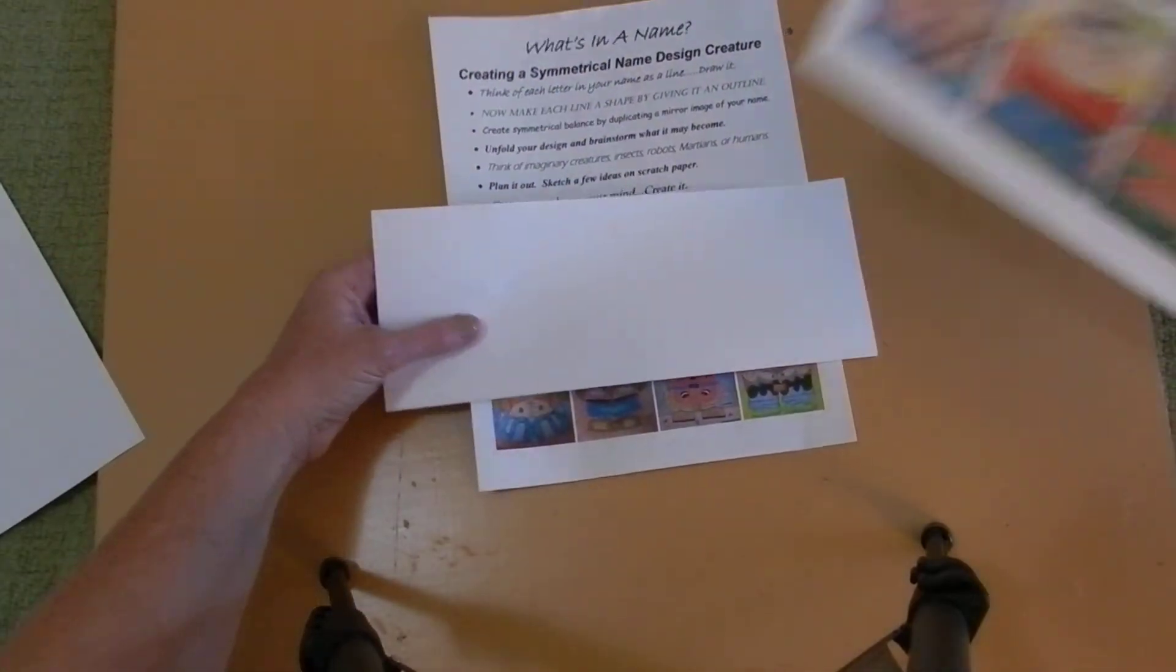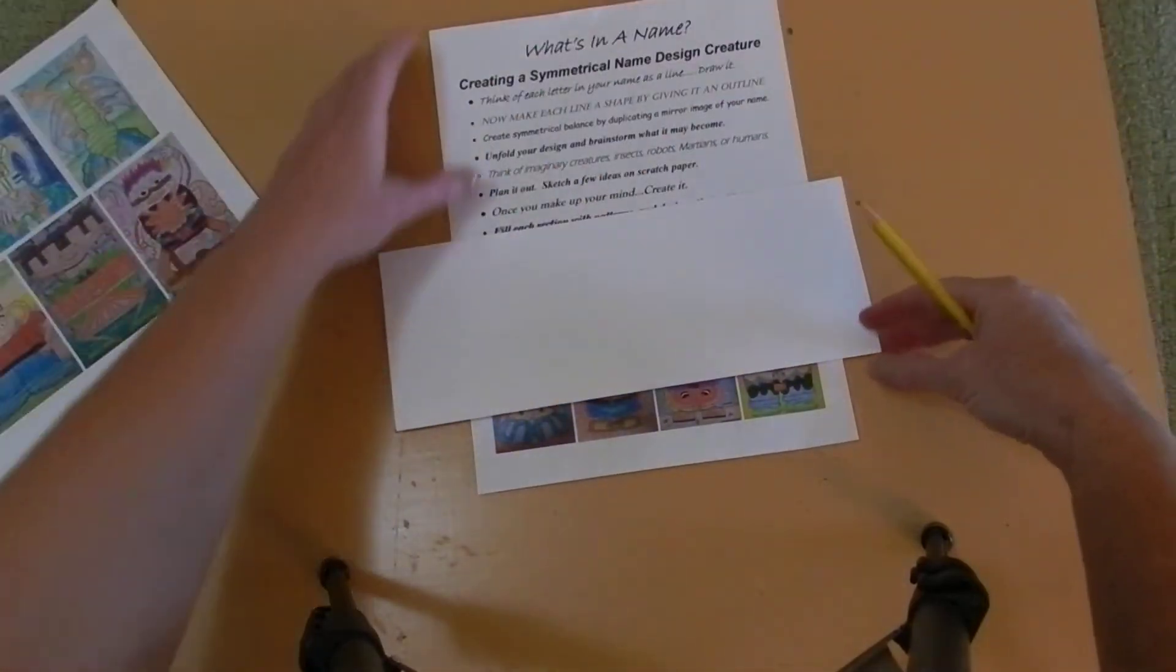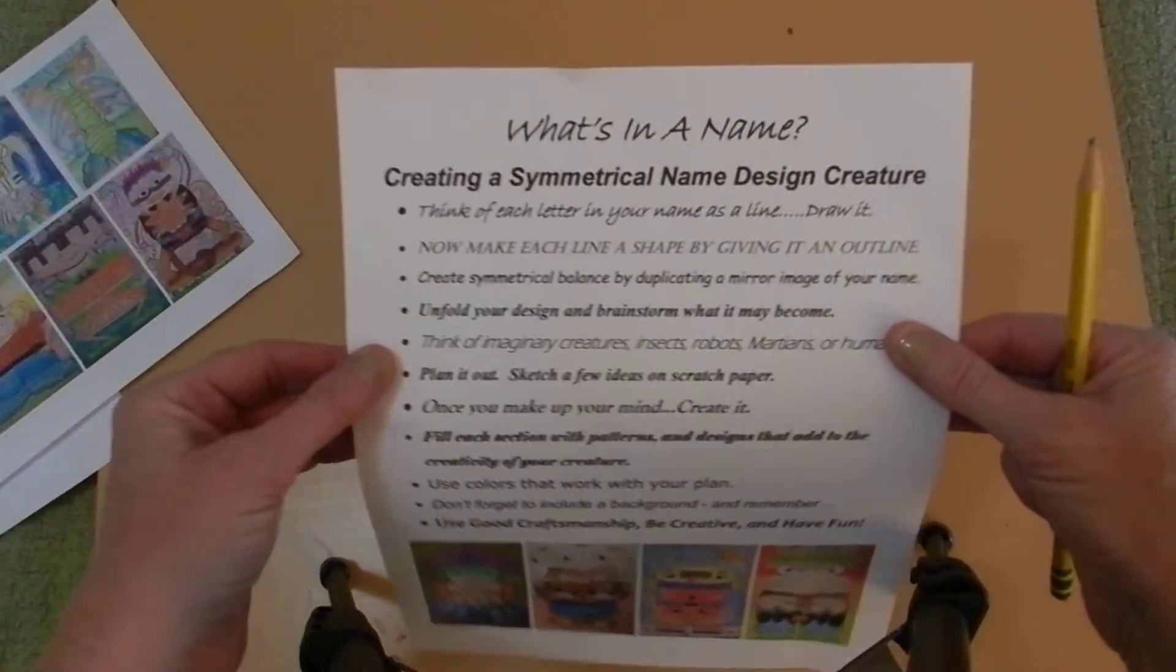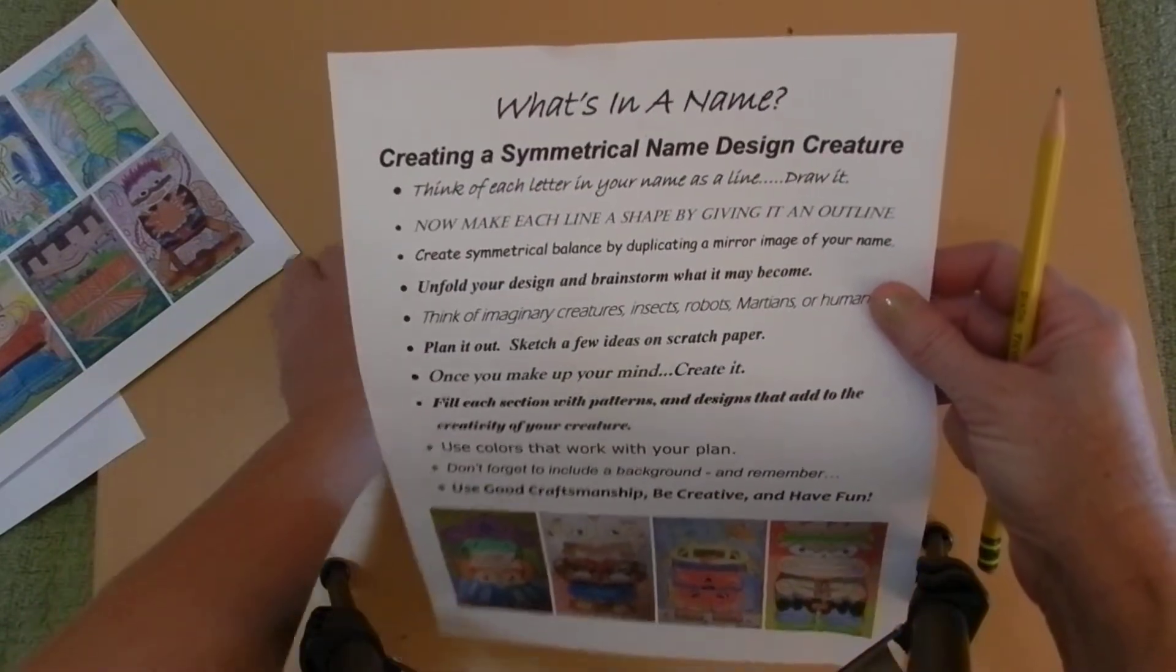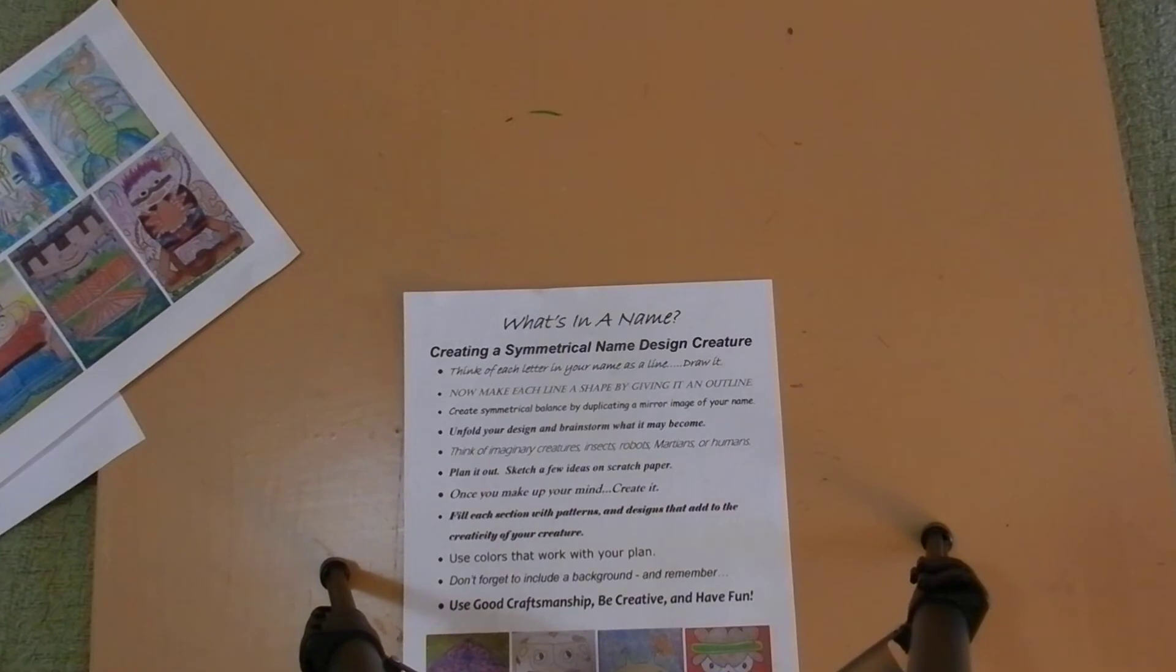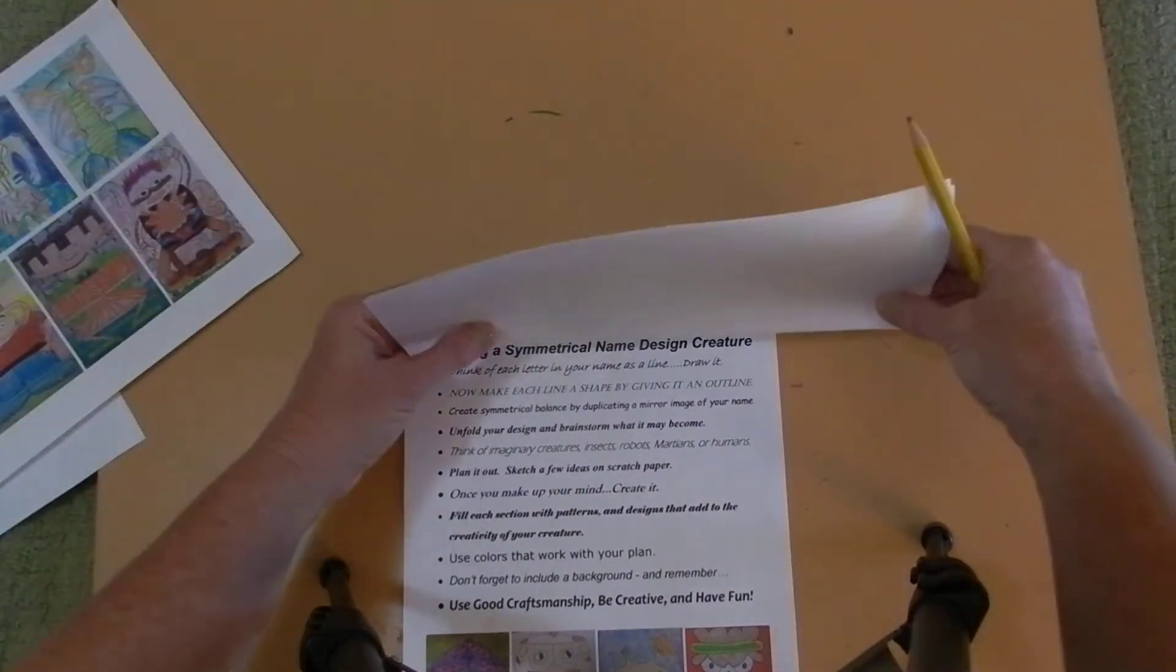Remember, a criteria list is a list of things that you need to do to make sure your design is successful. Step number one: Think of each letter in your name as a line and draw it. So I've got my piece of paper that's folded in half and I'm going to draw my name.